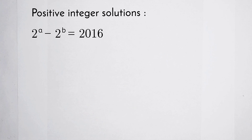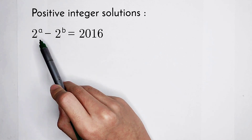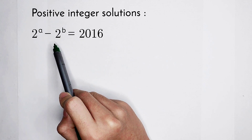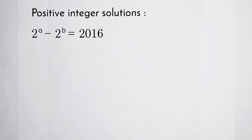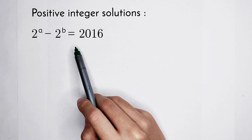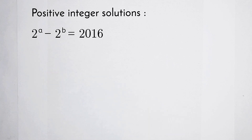You should know that 2 to the power of A and 2 to the power of B are both positive, and A and B are both real numbers. Pay more attention to the right-hand side: 2016 is a positive integer.